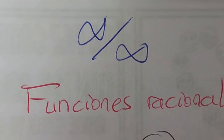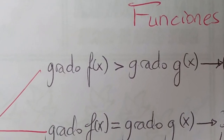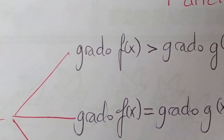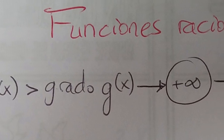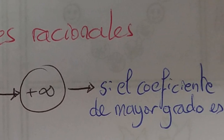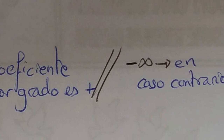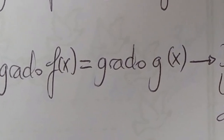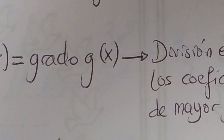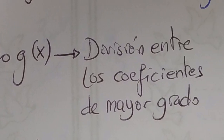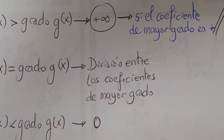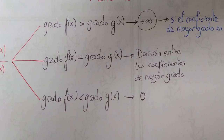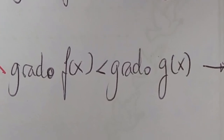La típica indeterminación infinito/infinito se suele dar como resultado de límites de funciones racionales, donde en el numerador y en el denominador hay una función polinómica. Hay tres posibilidades: que el grado del numerador sea mayor al del denominador, lo que implica que el límite sea infinito (o menos infinito si el coeficiente de mayor grado es negativo); que los dos grados sean iguales, en cuyo caso el resultado es la división entre los coeficientes de mayor grado; o que el grado del numerador sea menor al del denominador, en cuyo caso el límite tiende a cero.